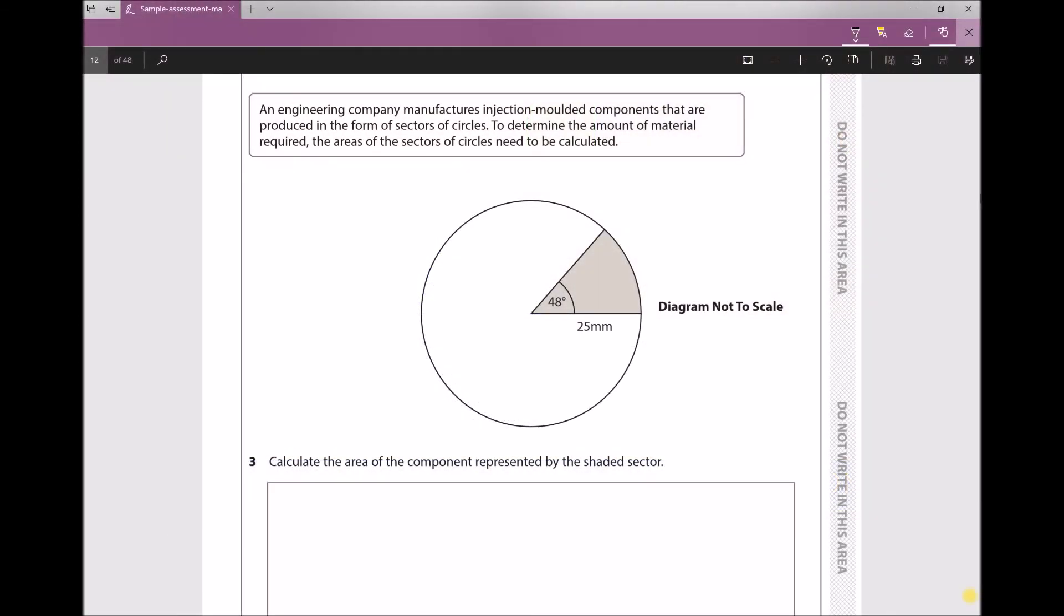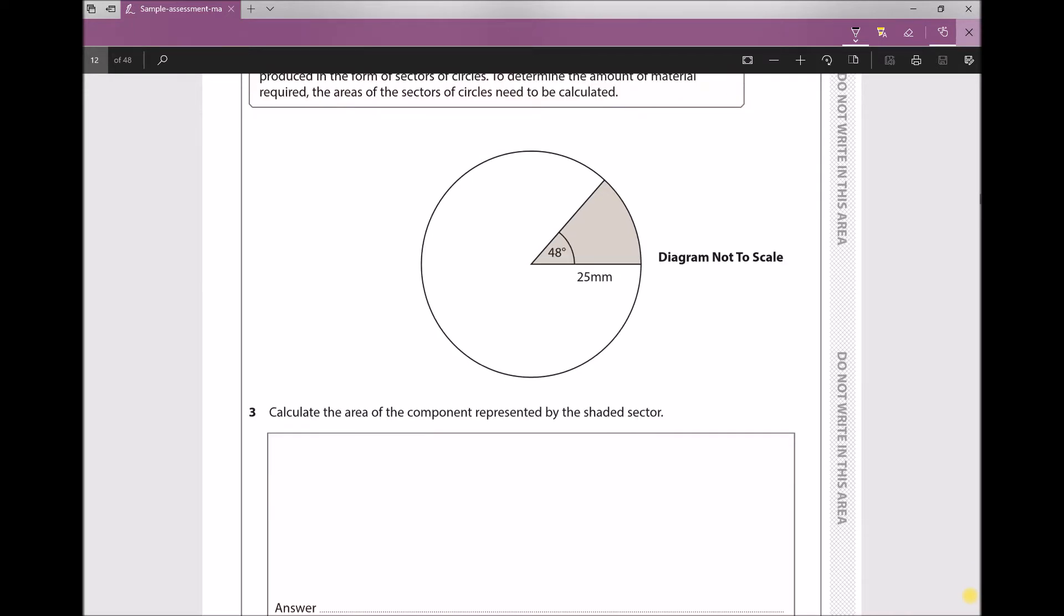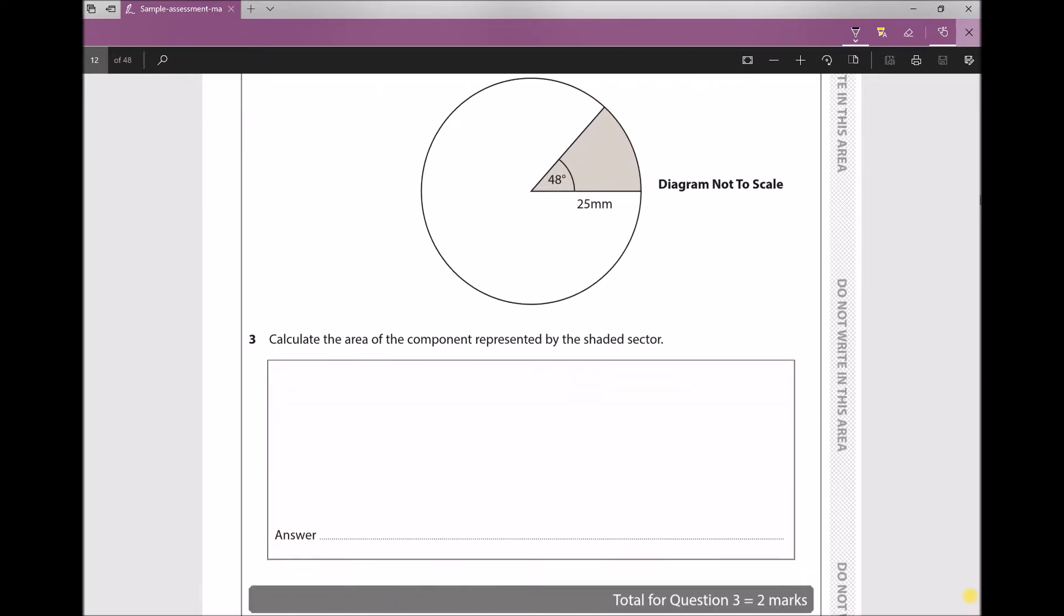Question 3 states that an engineering company manufactures injection molded components that are produced in the form of sectors of circles. To determine the amount of material required, the area of the sectors of circles need to be calculated. The question states: calculate the area of the component represented by the shaded sector.